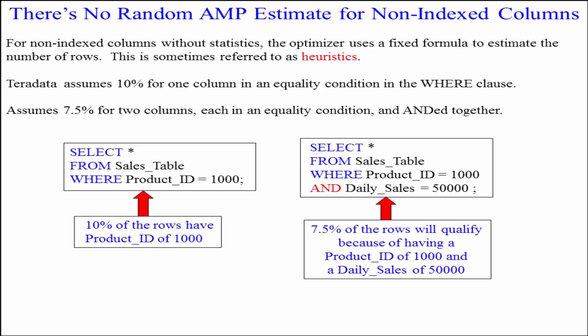There's no random amp estimate for non-indexed columns. For non-indexed columns without statistics, the optimizer uses a fixed formula to estimate the number of rows. This is sometimes referred to as heuristics.